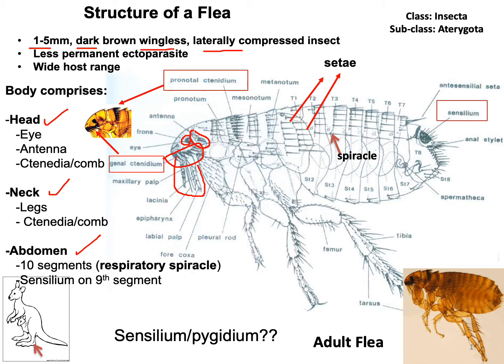Depending on the size and number of spines of the genocomb, some flea species can be identified. After the head, the neck is located. The neck is divided into three segments: the first is the pronotum, the middle is the mesonotum, and the third is the metanotum. On the pronotum segment there is another structure called the pronotal comb, and depending on the size and number of the genocomb and pronotal comb, some species of flea can be identified.